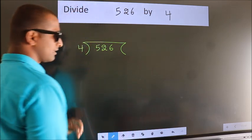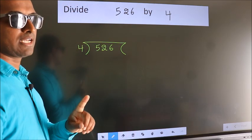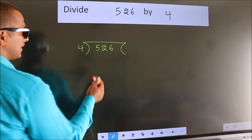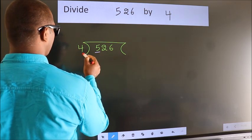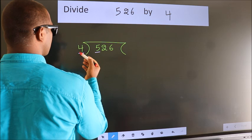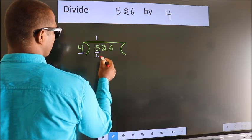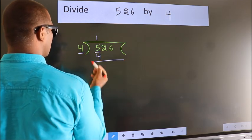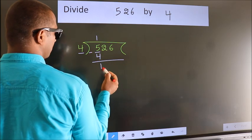This is your step 1. Next, here we have 5, here 4. A number close to 5 in the 4 table is 4, once 4. Now, we should subtract. We get 1.